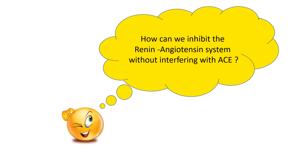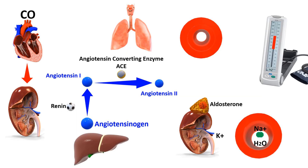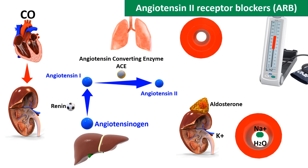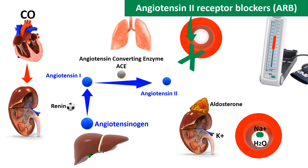The important question for scientists was: how can we inhibit the renin-angiotensin system without interfering with angiotensin converting enzyme? And luckily, they reached a solution. The angiotensin receptor blockers group, abbreviated as ARB, will inhibit the binding of angiotensin 2 to their cellular receptors. Thus, angiotensin 2 will not be able to induce vasoconstriction, and instead vasodilation is induced.